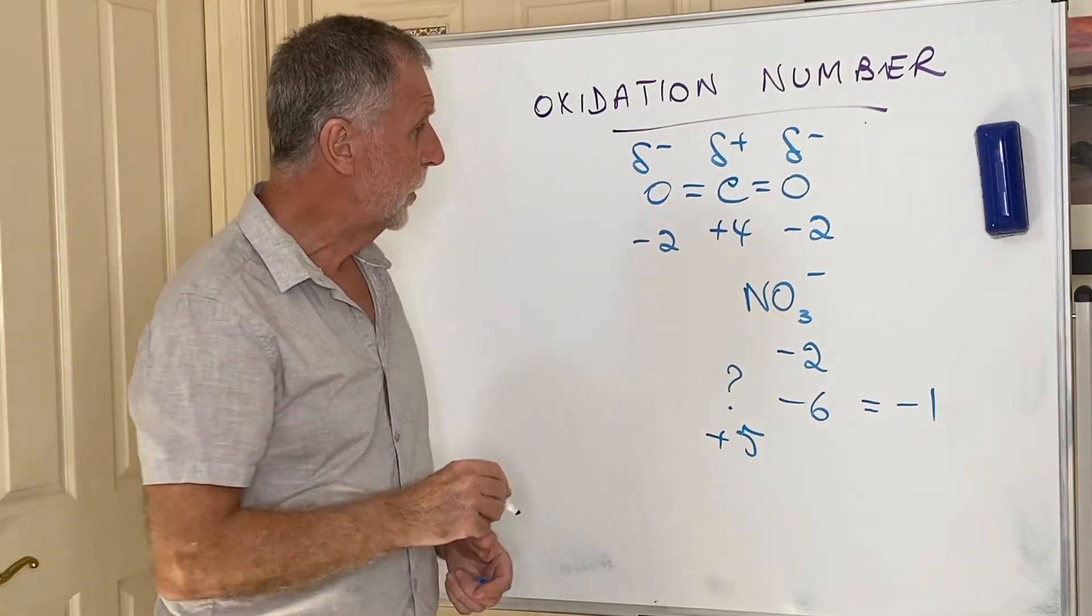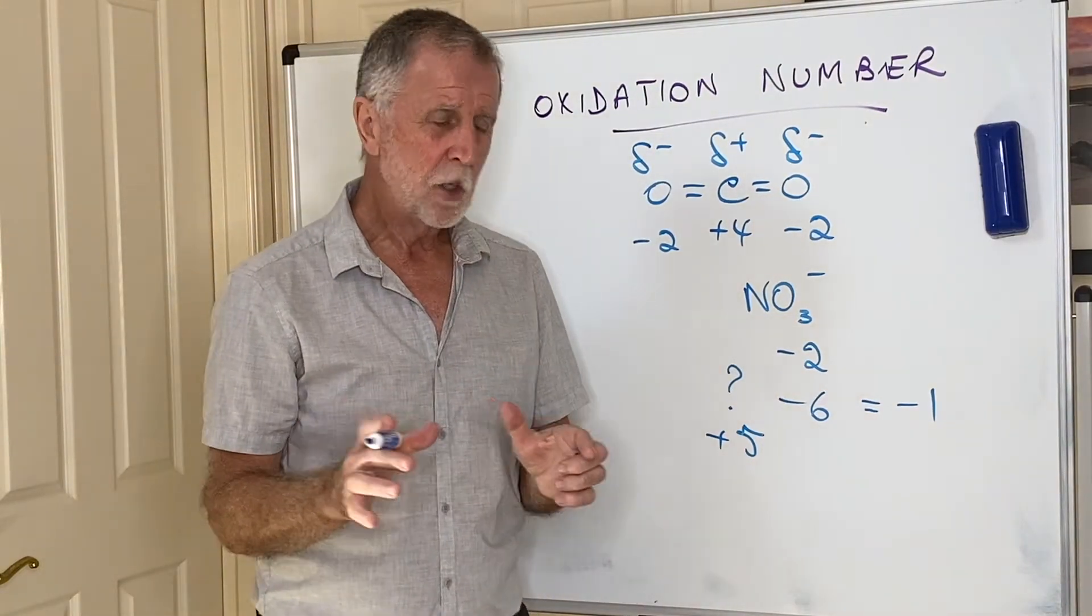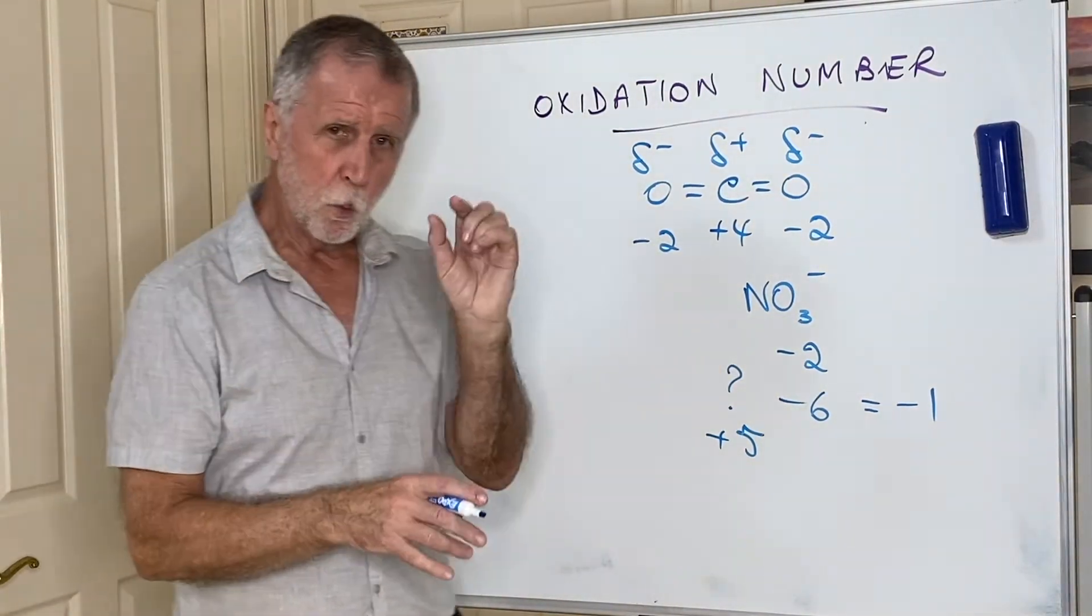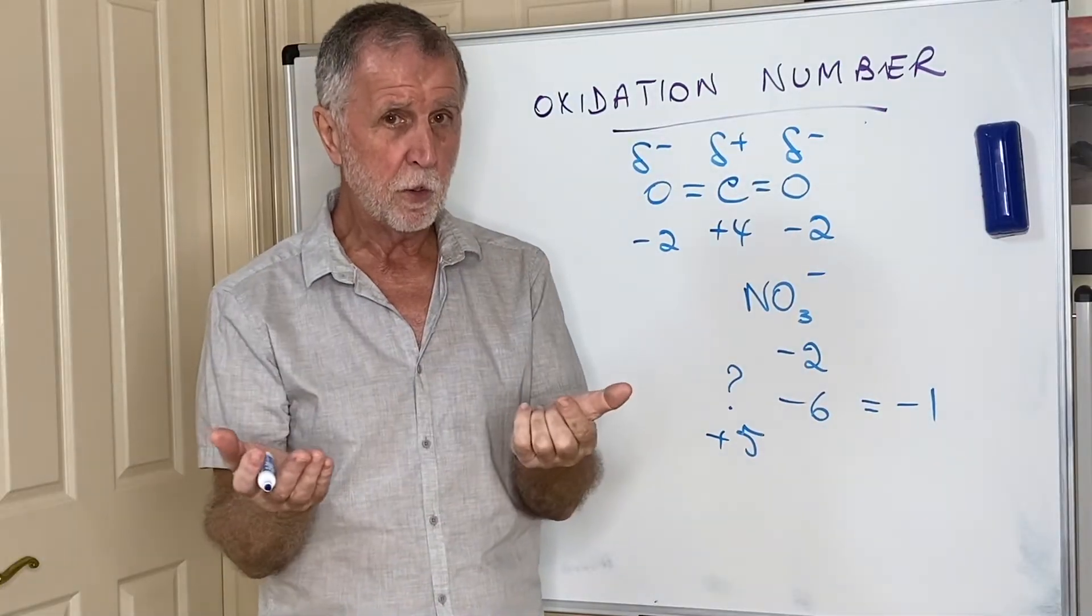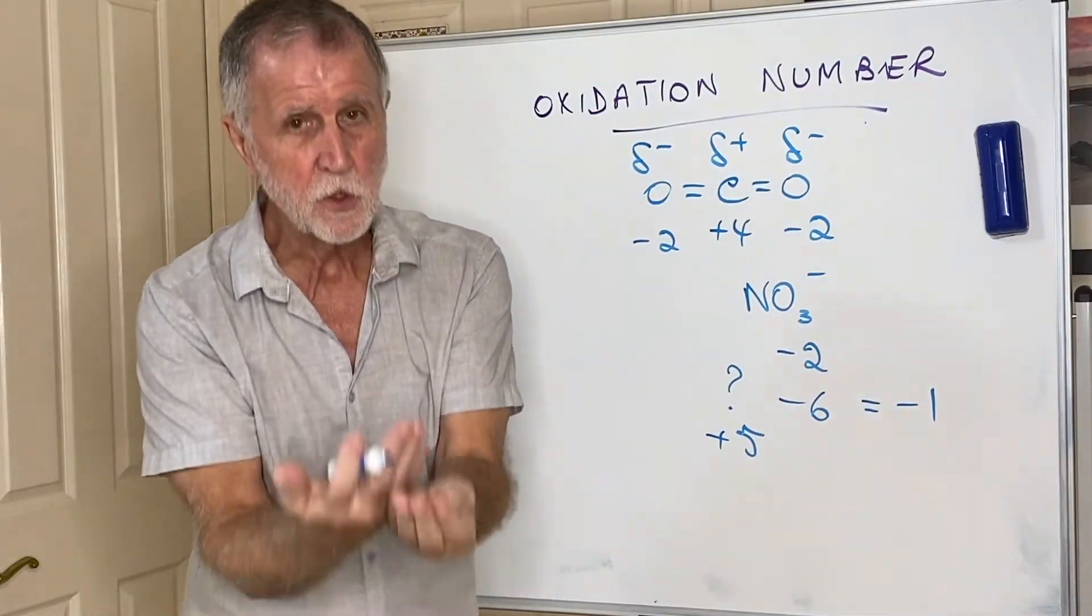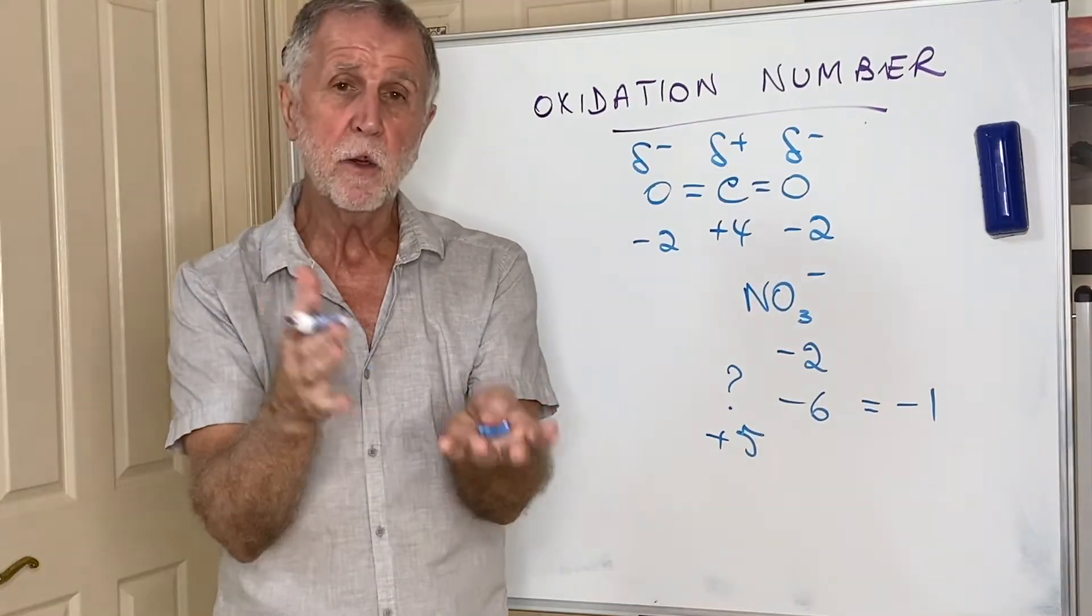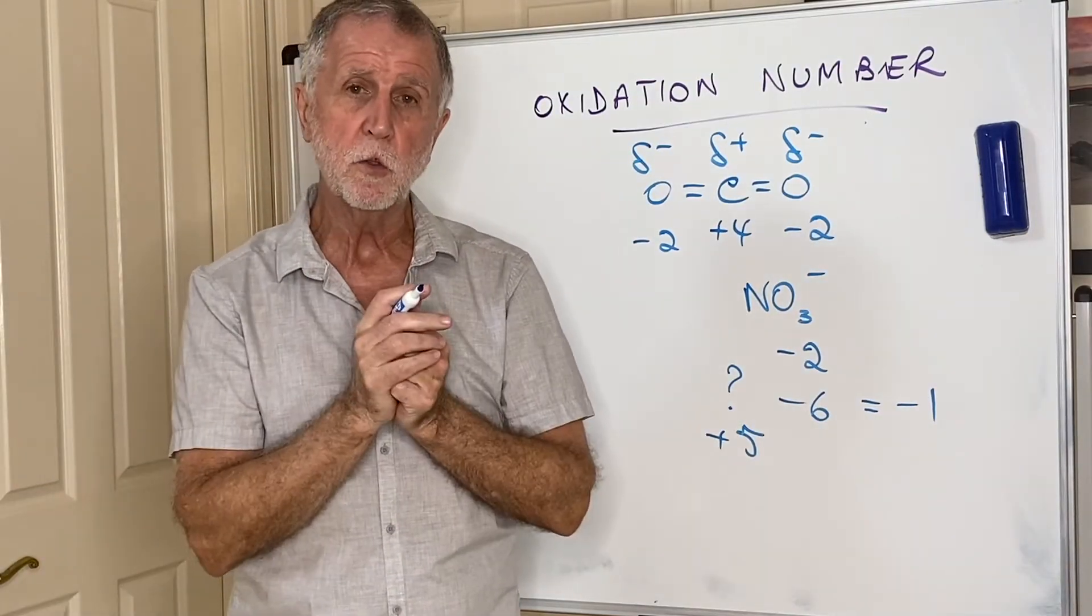They're really quite easy. Just identify which is the more electronegative element in a covalent compound, give it the electrons it requires, and then work out the two values.